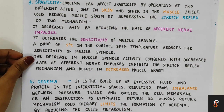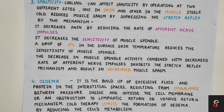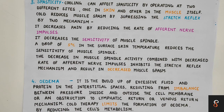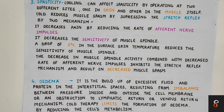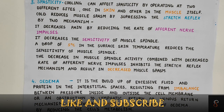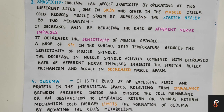Third is spasticity — a muscle control disorder characterized by tight, stiff muscles and inability to control those muscles. Cooling affects spasticity by reducing muscle spasms through suppression of the stretch reflex by two mechanisms: reducing the rate of afferent nerve impulses, and reducing conduction velocity and number of impulses. It also reduces pain by decreasing release of pain-inducing irritants like prostaglandins and bradykinins. Fourth is edema — a buildup of excessive fluid and protein in the interstitial spaces causing swelling. Cold therapy decreases cellular metabolism and thereby limits the formation of edema.